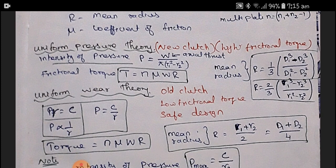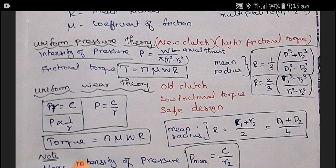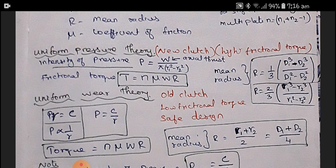Uniform pressure theory is for new clutches with high frictional torque. The intensity of pressure P equals W divided by π(R1² − R2²), since pressure equals load by area. The frictional torque T equals NμW × R, where R has two formulas: R = (1/3) × (D1³ − D2³)/(D1² − D2²), or equivalently R = (2/3) × (R1³ − R2³)/(R1² − R2²).